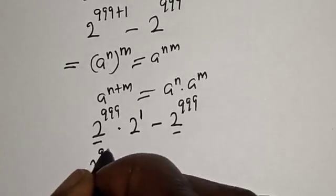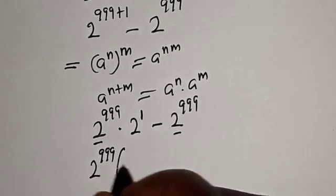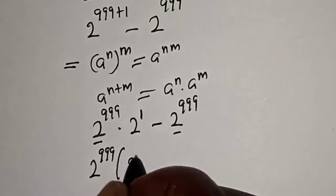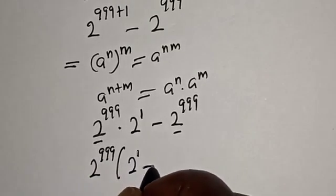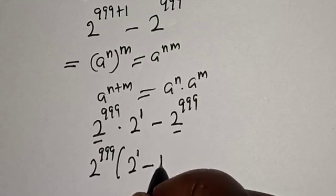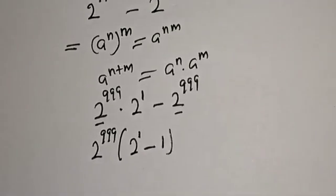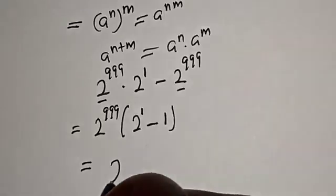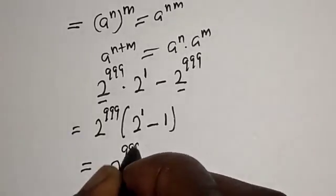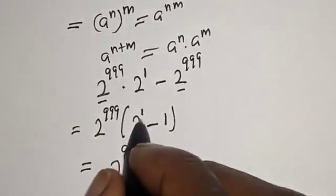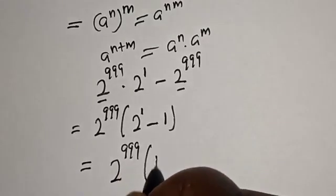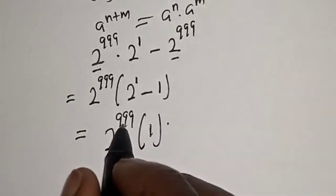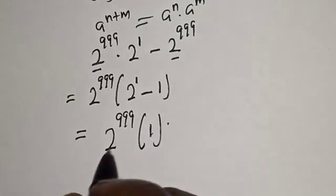Factoring out 2 raised to power 999, we get: 2 raised to power 999 times the bracket 2 raised to power 1 minus 1. That is 2 raised to power 999 into bracket 2 minus 1, which equals 2 raised to power 999 times 1.